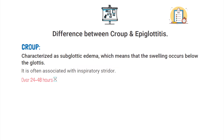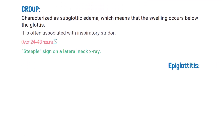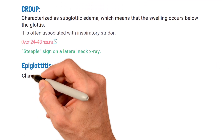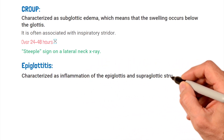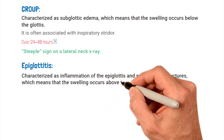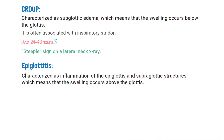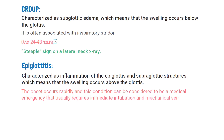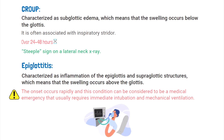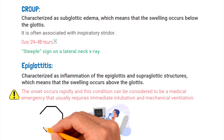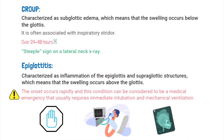One thing to look for when croup is present is the steeple sign on an AP x-ray. Epiglottitis, on the other hand, is characterized as inflammation of the epiglottis and supraglottic structures, meaning the swelling occurs above the glottis. With epiglottitis, the onset occurs rapidly and it can be considered a medical emergency that usually requires immediate intubation and mechanical ventilation. When epiglottitis is present, you should look for the thumb sign on the lateral neck x-ray.